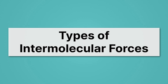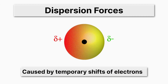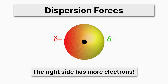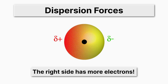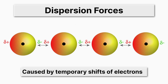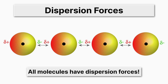Let's quickly review the types of intermolecular forces. First up, we have dispersion forces. Here we see an atom where on the left-hand side, indicated in red, we have a positive charge, while on the right-hand side, in green, we have a negative charge. That means the electrons have shifted and are unequally shared for the moment. Dispersion forces are caused by temporary shifts of electrons. The right side has more electrons — that's why it's negatively charged. When we put a bunch of these atoms together, there are attractive forces between them. All molecules have dispersion forces.